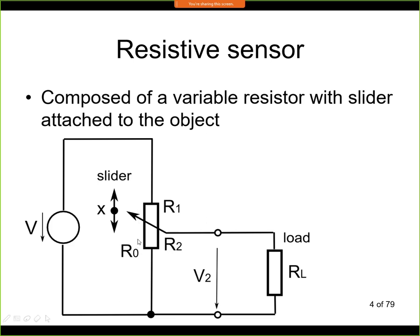As the slider moves, we are changing the values of resistor R1 and R2. R2 is the part of resistance below the slider and R1 is the part above. The total resistance R0 equals R1 plus R2. Typically we do not measure the resistance directly but measure the voltage, since it's easier. We do not measure R2 directly but measure the output voltage V2. We need a power supply — typically some low DC voltage, something like 5 to 12 volts — to power this sensor.